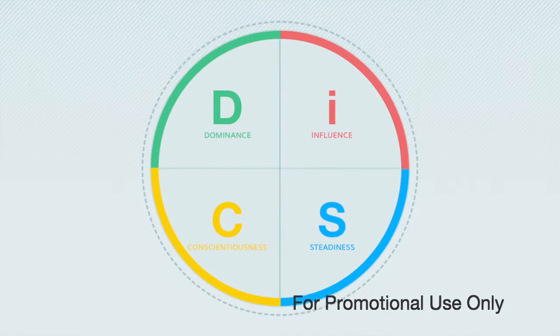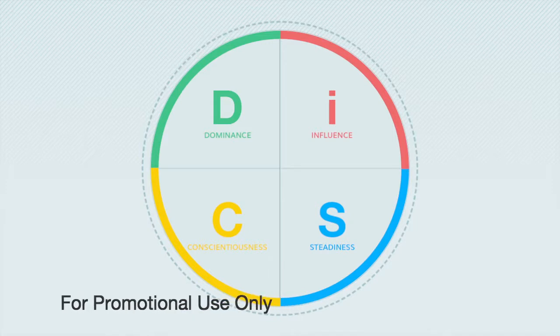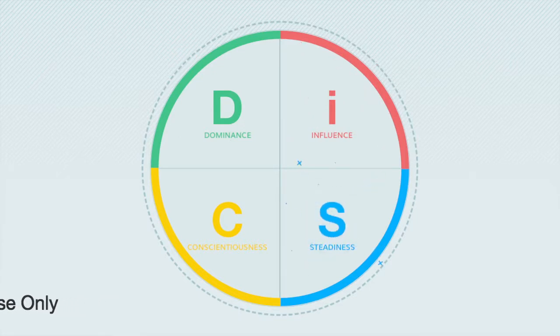This is DISC, your decoder. It gives you a way to quickly understand the needs and priorities of the people around you. It describes four basic styles: D, I, S, and C. Here's how it works.